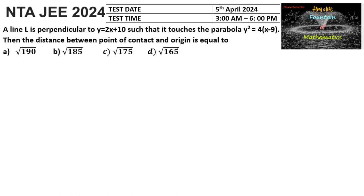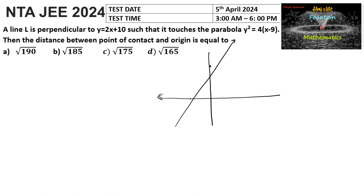A line L is perpendicular to y = 2x + 10. The line 2x + 10 has y-intercept 10 and x-intercept negative 5, so we can draw the line. Our required line is perpendicular to it and tangent to the parabola y² = 4(x − 9), that is (y − 0)² = 4·1·(x − 9). The vertex of the parabola is (9, 0).